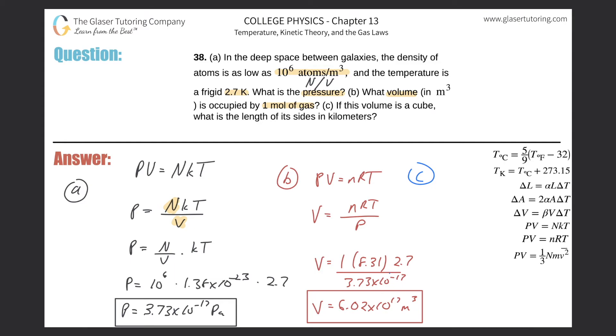So letter C: If this volume is a cube, what is the length of its side in kilometers? Okay, so basically they told us the volume is a cube, right? So you have to know that the volume of a cube is equal to the sides cubed, right? The length of the sides cubed.